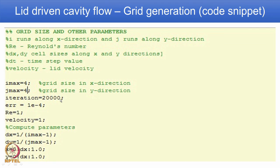This is an actual working code written in MATLAB. What is shown here is the beginning of that code. Some parameters need to be defined at the beginning: the number of iterations is given as 20,000, the tolerance or convergence limit is error = 1×10⁻⁴, Reynolds number is 1, and velocity is 1. We compute dx = 1/(imax−1) and dy = 1/(jmax−1).